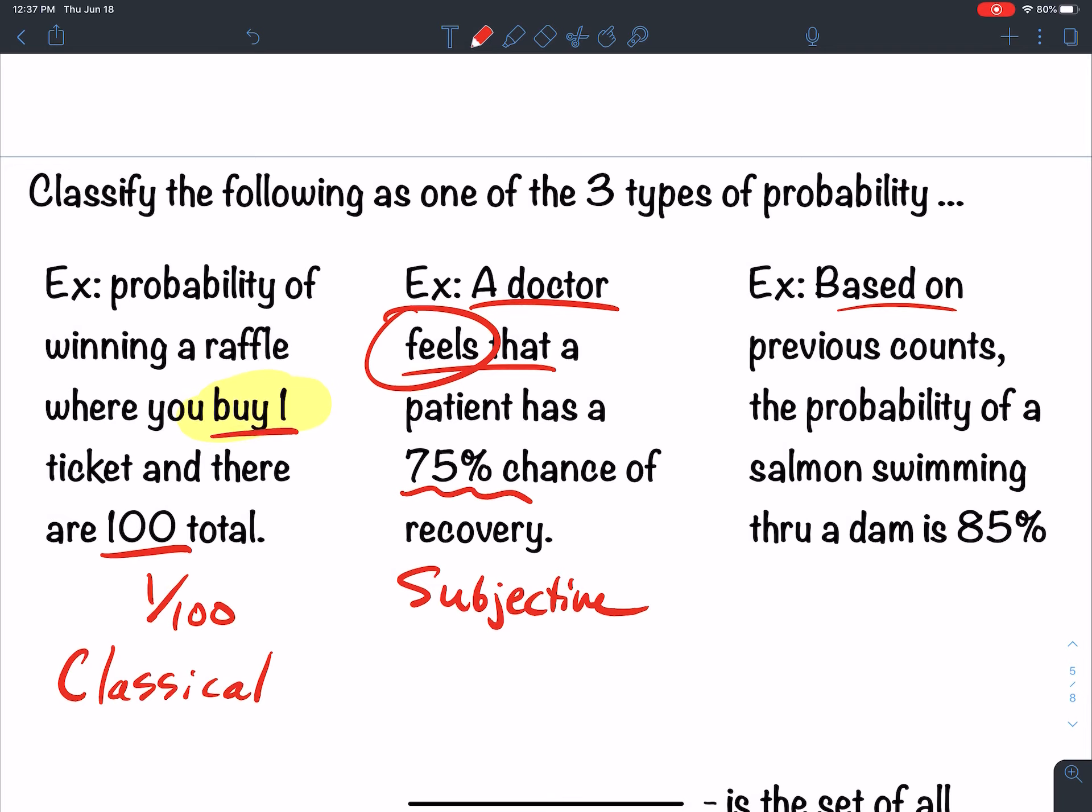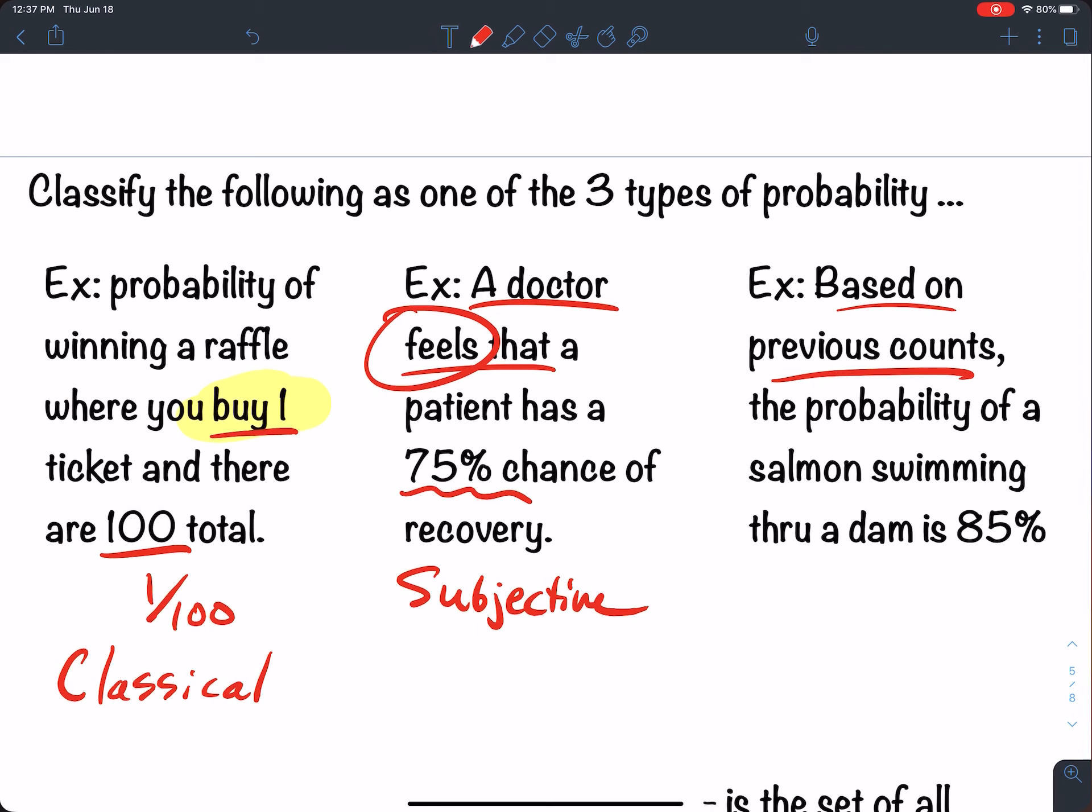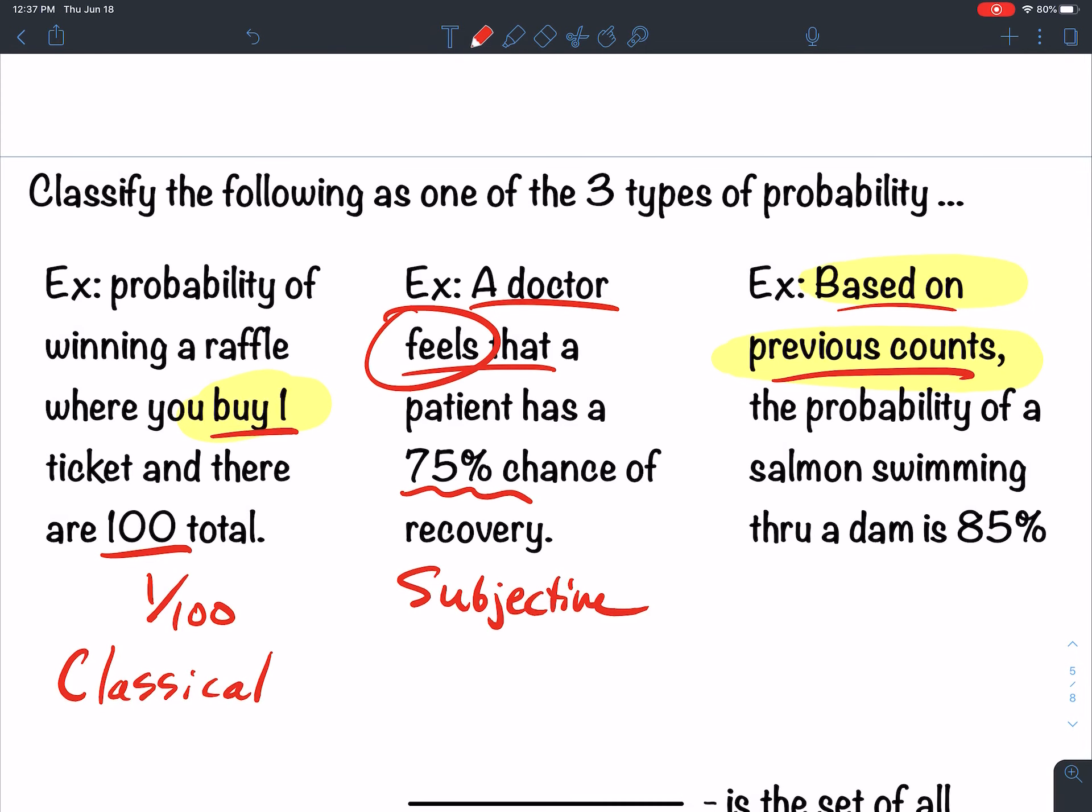Now, this last one, based on previous counts, if I ever see based on previous counts, I'm automatically thinking empirical probability. The probability of salmon swimming up through a dam is 85%. So maybe they've studied the number of salmon that get through this dam and it's 85%. This is empirical. It's based off of data. The percentage, 85%, is based off of previous counts.